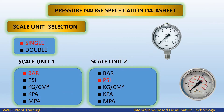Scale unit selection: single scale unit or double scale unit. Scale unit options include bar G, Psi, kg/cm² G, kPa, and MPa. We select a single scale with unit in bar for this application.